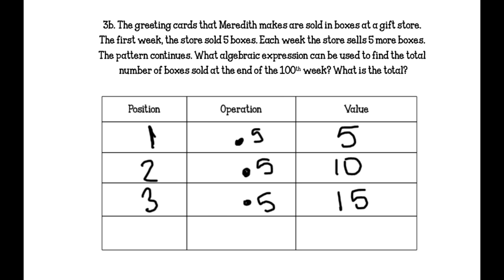What algebraic expression can be used to find the total number of boxes sold at the end of the hundredth week? What is the total? So during the nth week, you would multiply that by 5. So n times 5, it's easier to write that as 5n. And during the hundredth week, we would take 5 times 100, and we would get 500 boxes.